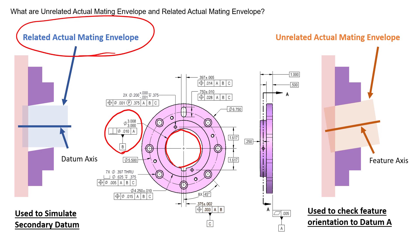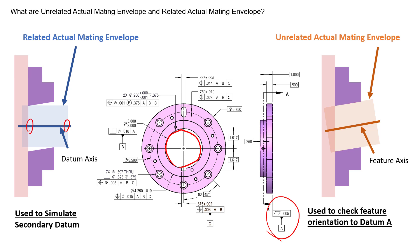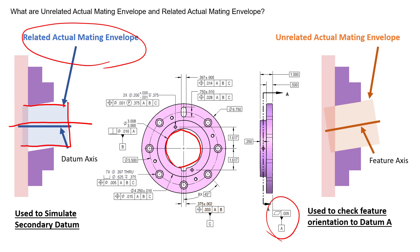We're going to use the related actual mating envelope to give us the datum axis for datum feature B. The datum simulator for A is going to be a flat plane or surface, since we have a flat plane identified as our primary datum — something like a granite table that's perfectly flat. Datums are always perfectly perpendicular to each other, so datum A is perpendicular to datum B. In order to obtain an axis from a feature that is not perpendicular to our primary datum plane, we need to create an envelope that is perpendicular. This cylindrical envelope expands inside the feature while remaining perpendicular to datum plane A. That envelope, oriented perpendicular to A, is our related actual mating envelope, and the axis of that envelope is our datum axis.